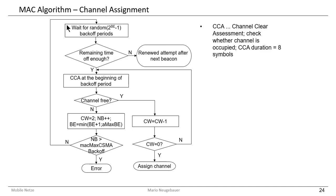First we have to wait for a random number of backoff periods. After this random waiting time, we check if the remaining time is enough for sending the package to the coordinator. If not, the reduced function device has to wait for the next beacon and the next contention access period in which it is allowed to send again.